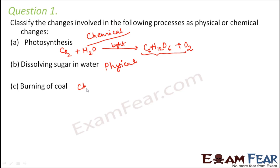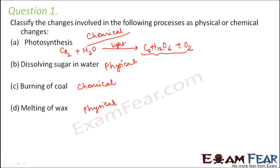Burning of coal is a chemical change because when we burn coal, a lot of heat is released, light is released, and ashes are produced — which are chemically different from coal. Melting of wax is a physical change because the chemical composition remains the same; wax still remains wax. It is just the state that changes — initially solid, then it becomes semi-solid when melting.